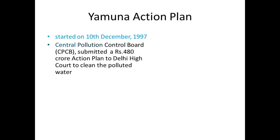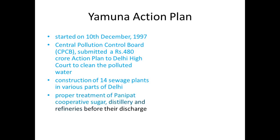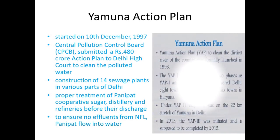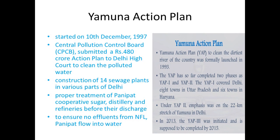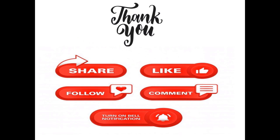The Yamuna Action Plan was started on 10 December 1997. The Central Pollution Control Board submitted a rupees 480 crore action plan to the Delhi High Court to clean polluted water, involving construction of 14 sewage treatment plants in various parts of Delhi. It also ensures proper treatment by Panipat cooperative sugar distillery and refineries before effluents are discharged, and that no effluents from NFL Panipat flow into water, with Panipat refinery treating its effluents for irrigation. These are the permissible limits of various parameters used to check drinking water quality. Hope you liked this informative video — please like, share, and subscribe for more videos.